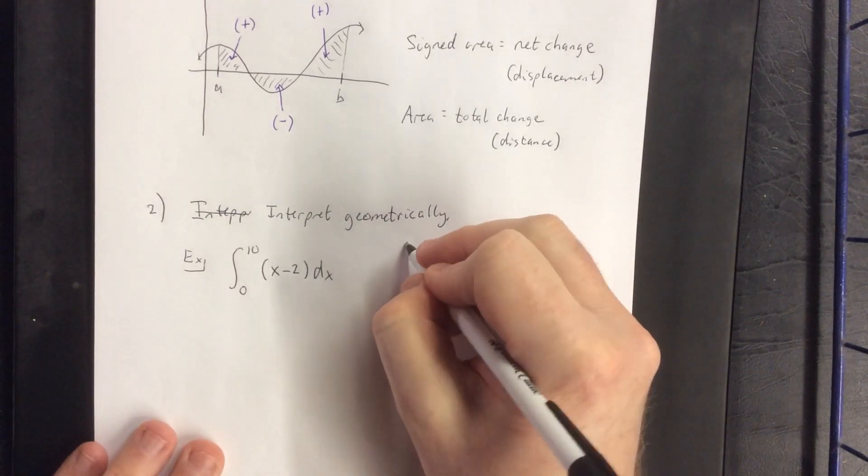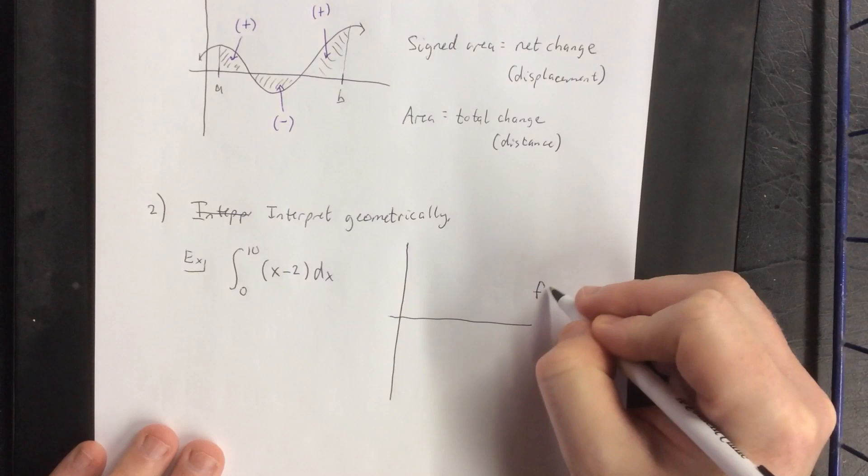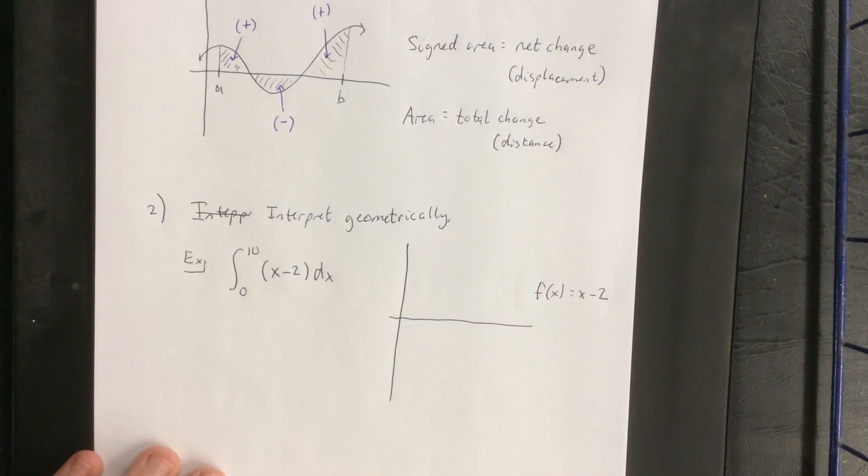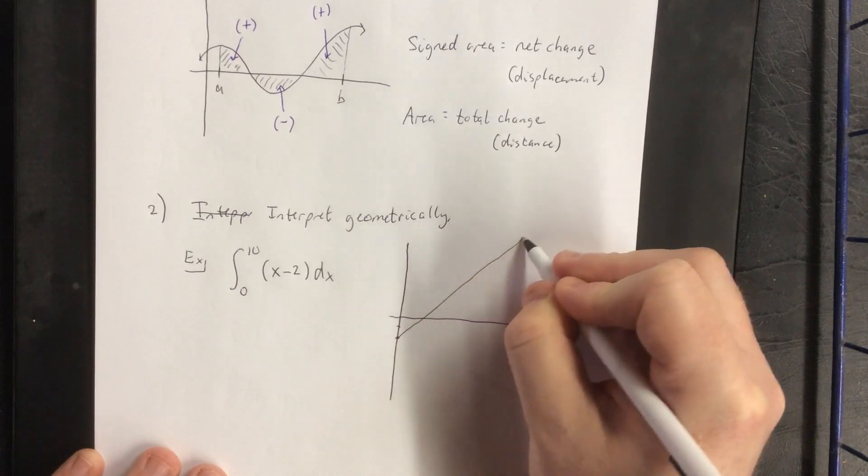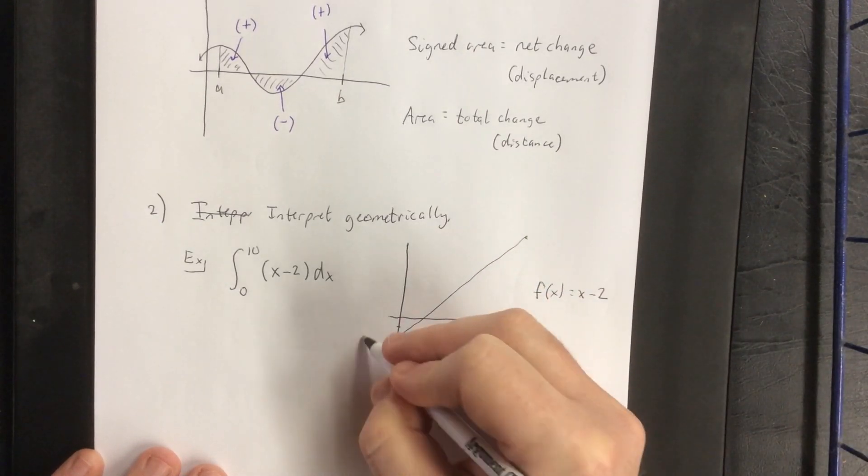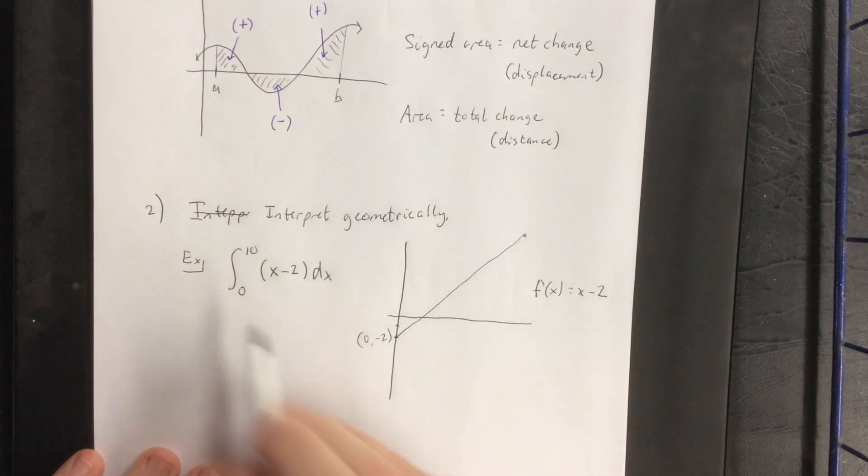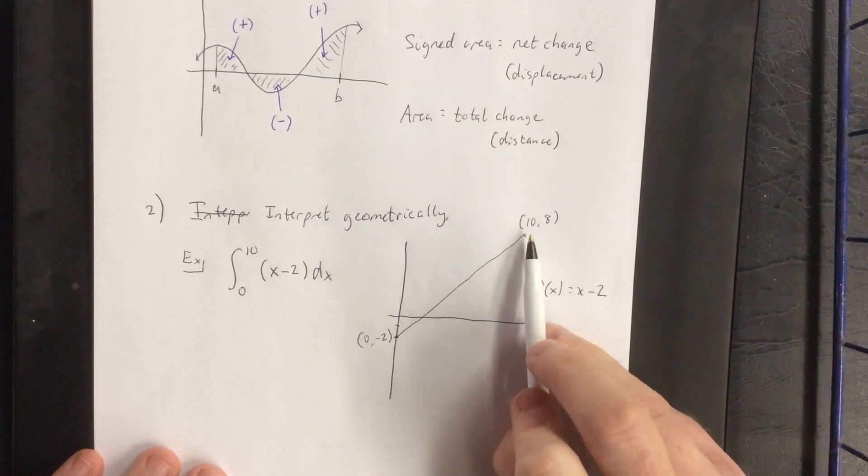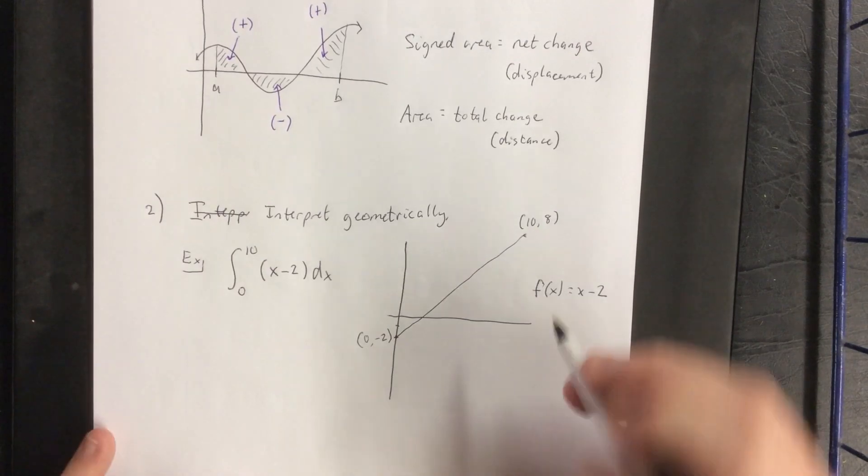First thing I'd like to do is sketch the function in question. The function in question would be f of x is equal to x minus 2. There'd be a straight line, slope 1, with a y-intercept down at negative 2. So this would connect the ordered pair 0 negative 2 to the ordered pair 10 8. We get the 10 from the x coordinate listed here. We get the 8 from plugging 10 into the given function.